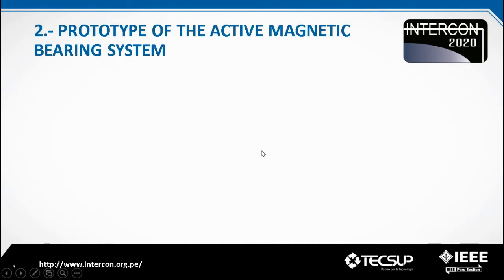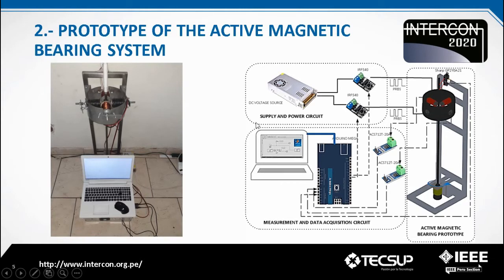The prototype of the active magnetic bearings used in this research is shown in the image. It is formed by a long iron shaft rotor, about one meter long, connected to a DC motor, and a stator that contains four electromagnets supported by a steel structure. In another image, we have an overview of the project implementation, in which an Arduino card is used to acquire the data, together with two current sensors for each electromagnet, a distance sensor, and two MOSFET modules to control the input voltage.